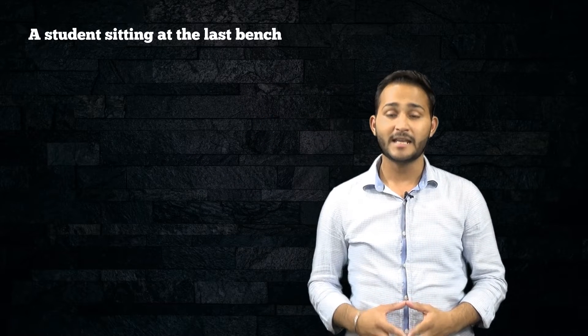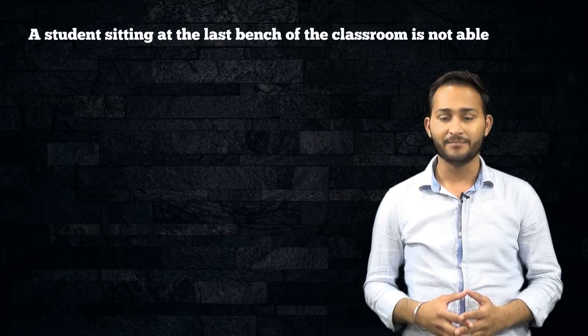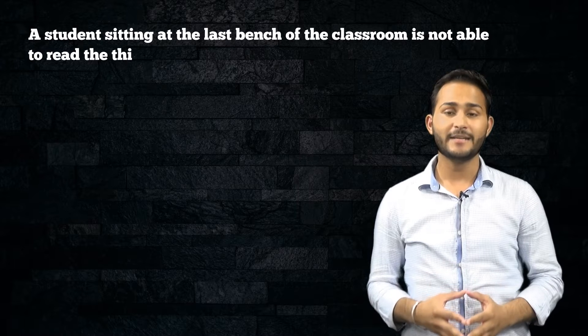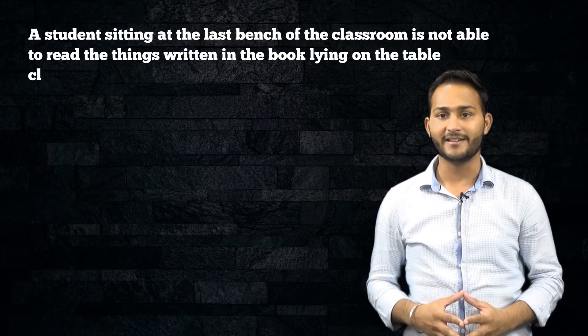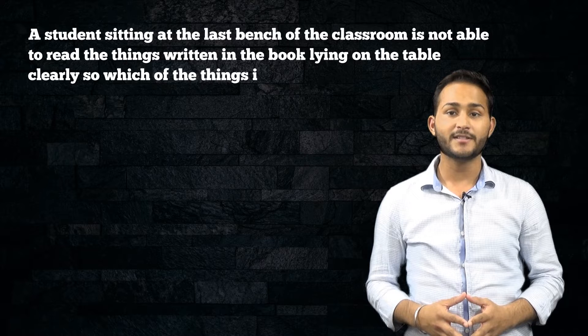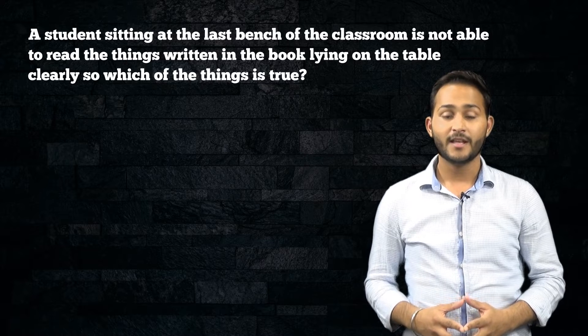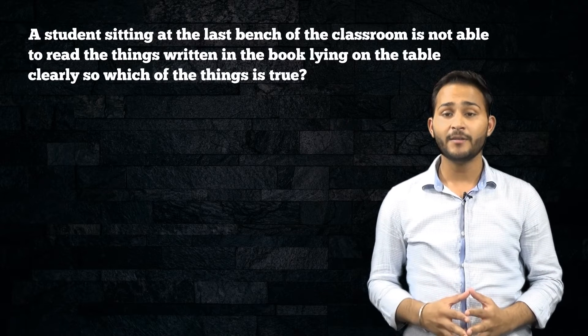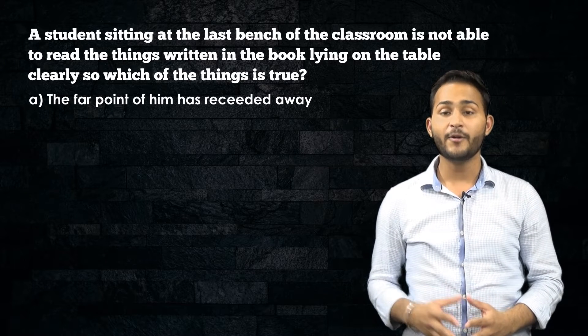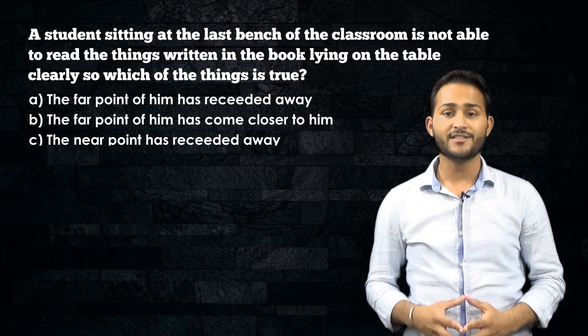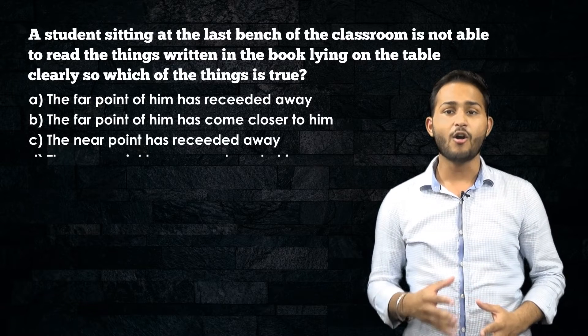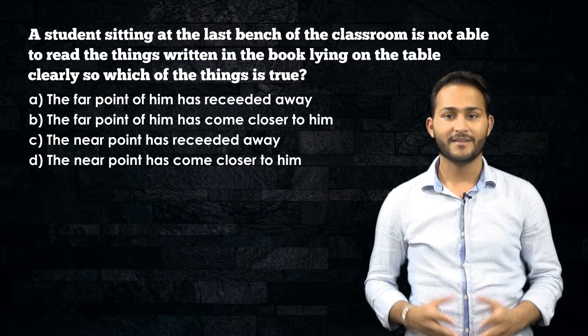In the next question, a student sitting at the last bench of the classroom is not able to read the blackboard clearly, but he is able to read the things written in the book lying on the table clearly. So which of the following statements is true? The far point of him has receded away, the far point of him has come closer to him, the near point has receded away, or the near point has come closer to him.